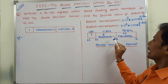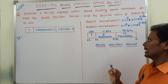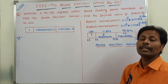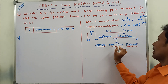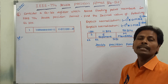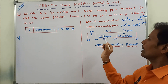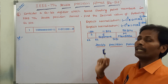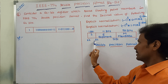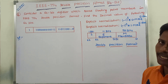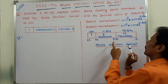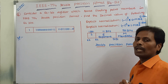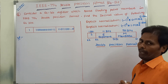The next field is called exponent, denoted by capital E. 11 bits are allocated for exponent, starting with 52 and ending with 62. Next, one bit is allocated for the sign bit, denoted by S, starting with 62 and ending with 63. So this is the 64-bit IEEE 754 double precision format.